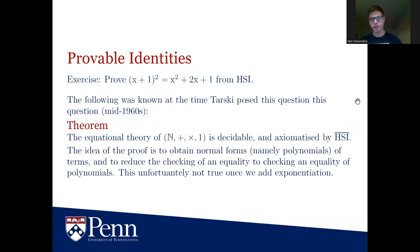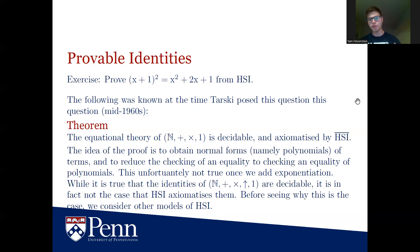The idea of the proof is that for every term — just some expression involving addition, multiplication, and any number of variables — we associate some polynomial to it and reduce checking the validity of the equation to checking equality of polynomials. Unfortunately, we can't do that once we add exponentiation, and things become much harder. It is still true that the identities of the positive integers with addition, multiplication, exponentiation, and 1 are decidable, but it is not true that any valid such equation can be derived from the high school identities.